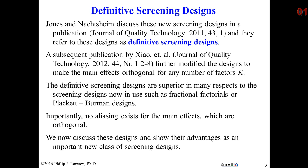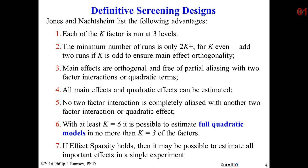Definitive screening designs have been around since 2011. They're interesting because they're similar in size to Plackett-Burman designs, but unlike Plackett-Burman designs, there is no partial aliasing of the main effects with other effects such as quadratic effects or two-way interactions. Recall that in Plackett-Burman designs, each main effect is partially aliased with every two-way interaction not involving that effect. These designs offer clear advantages in discerning the important effects.